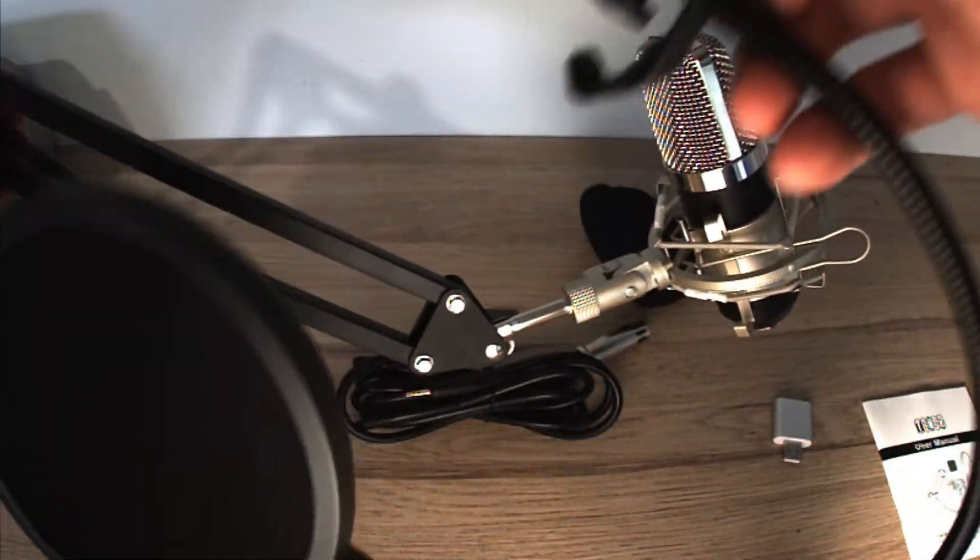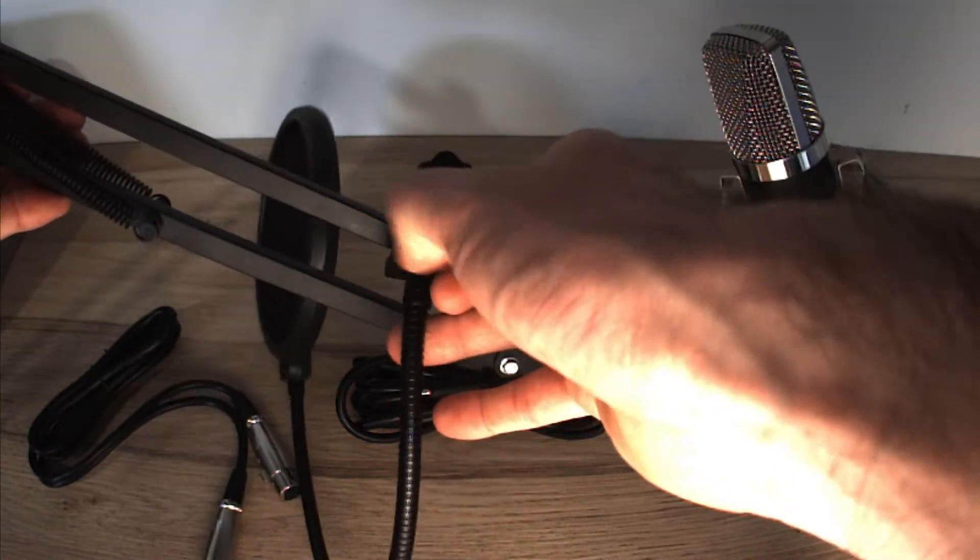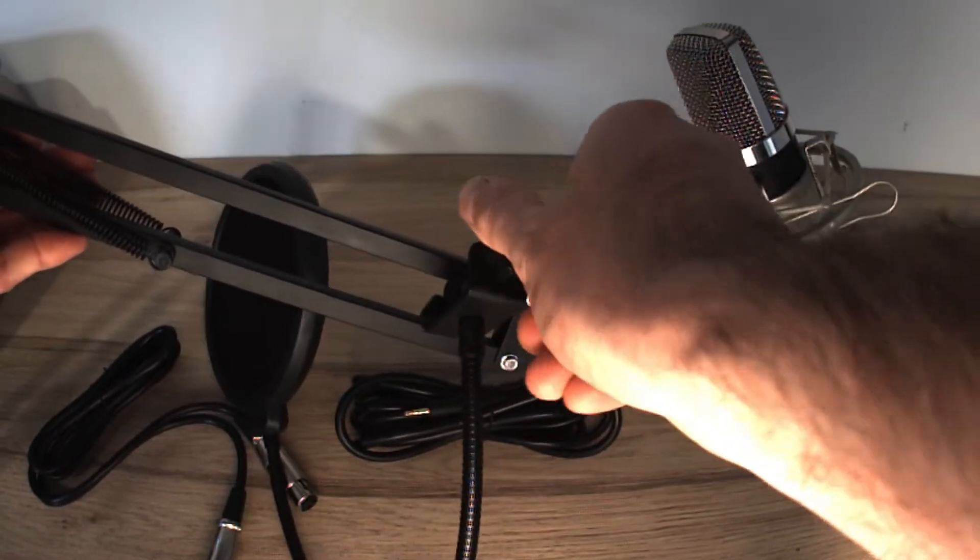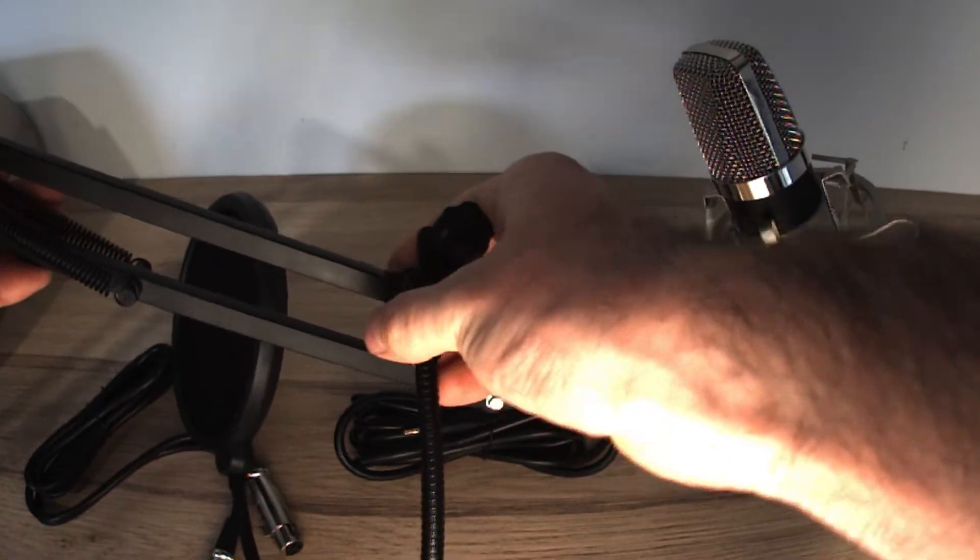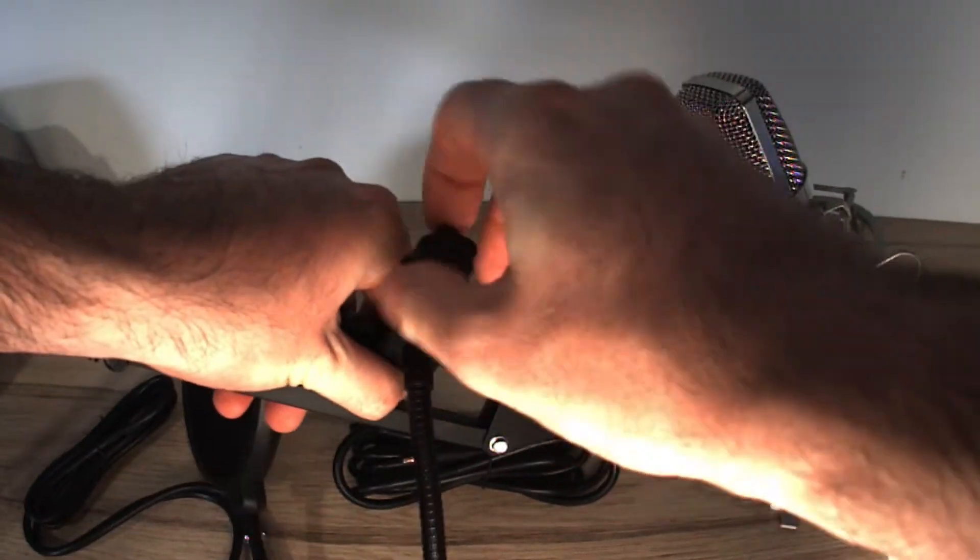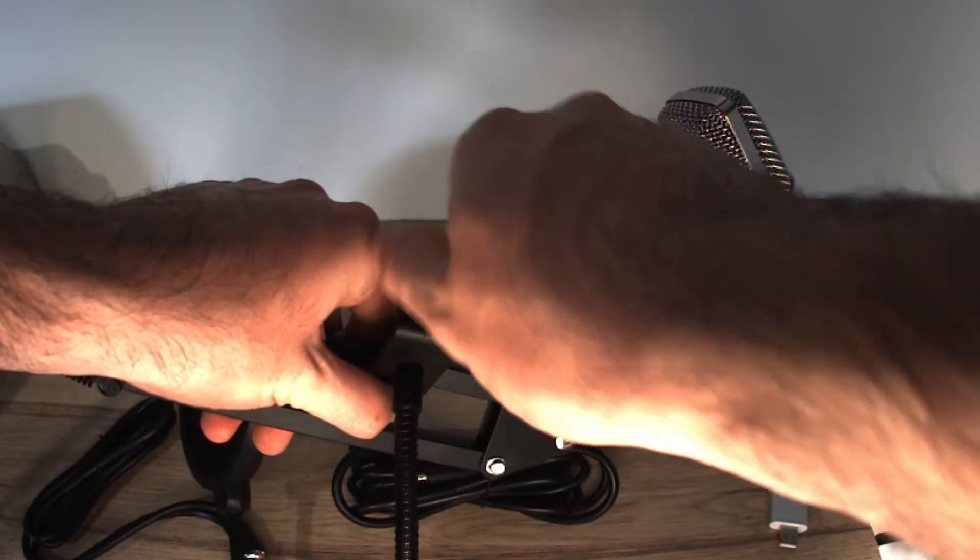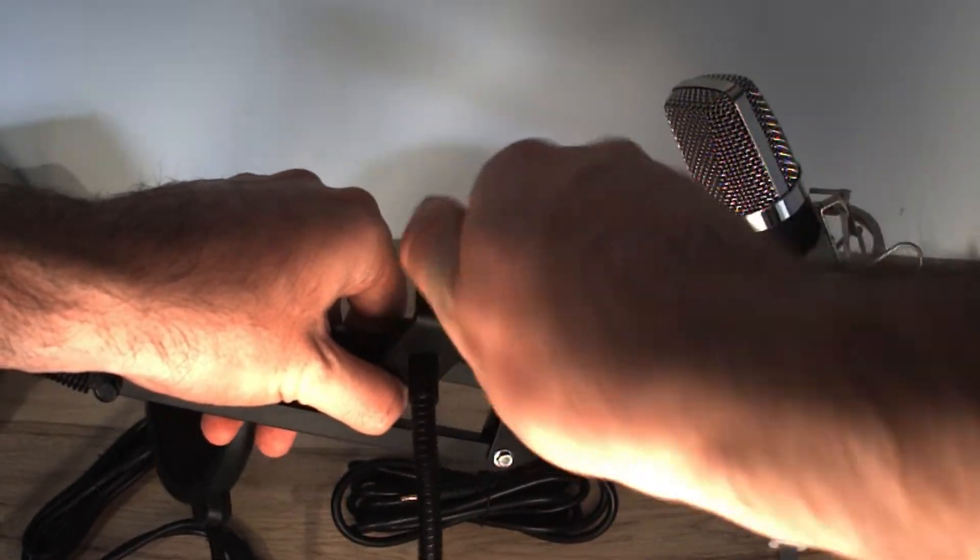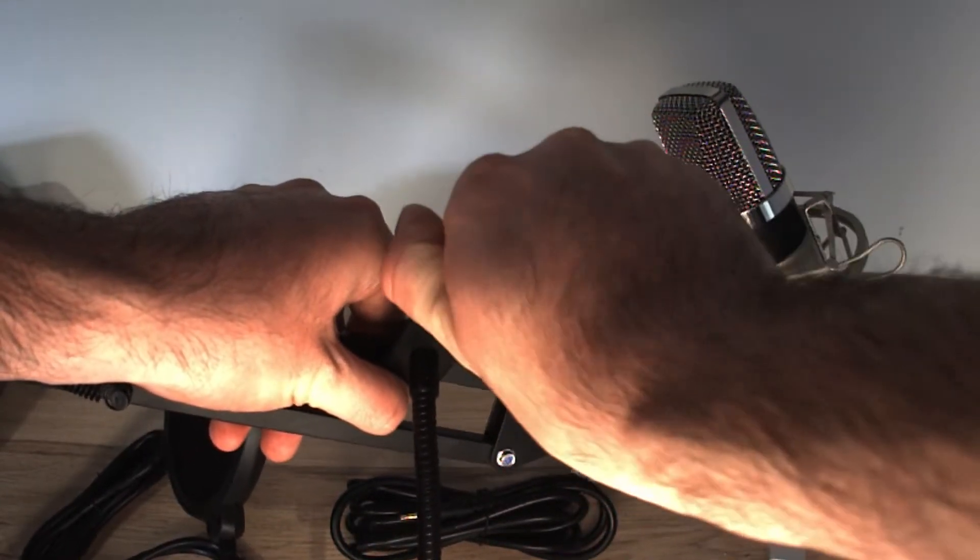Next we can add the pop filter. You could use either one. But this one just attaches to anywhere on the arm you want. Just screw it on. It can be a little bit flimsy. You might have to play around with it a bit to get it in a good position.